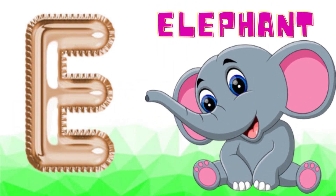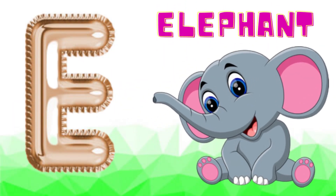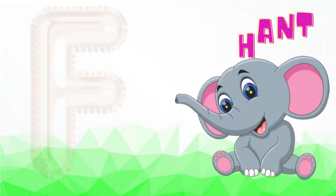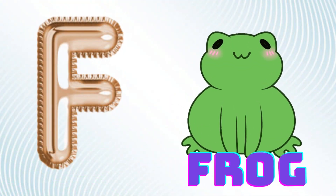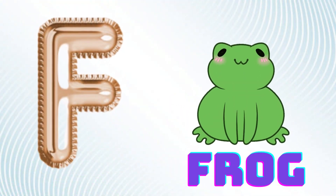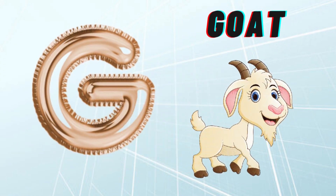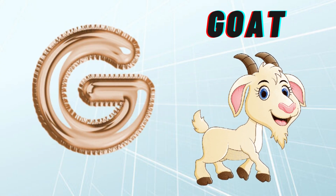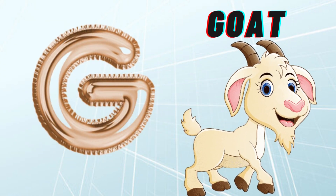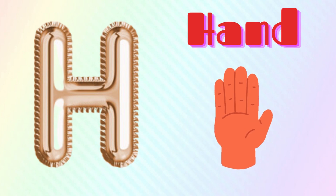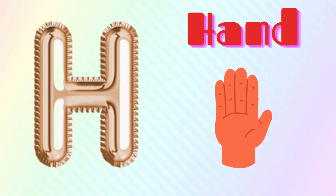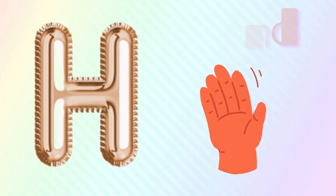E is for Elephant, E-E-Elephant. F is for Frog, F-F-Frog. G is for Goat, G-G-Goat. H is for Hand, H-H-Hand.